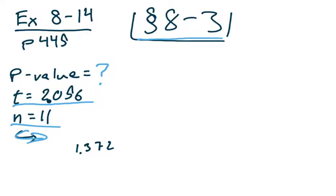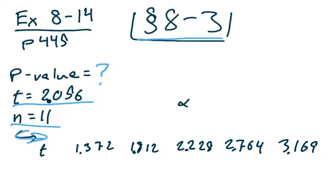So, row 10, I see these values 1.372, 1.812, 2.228, 2.764, and then finally 3.169. And those are a little bit messy, but here, these are critical T values. And then in each one of these, the corresponding column has a value for alpha.